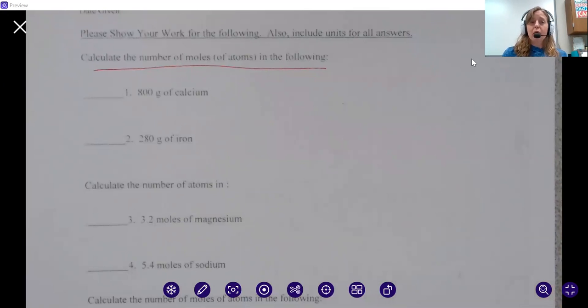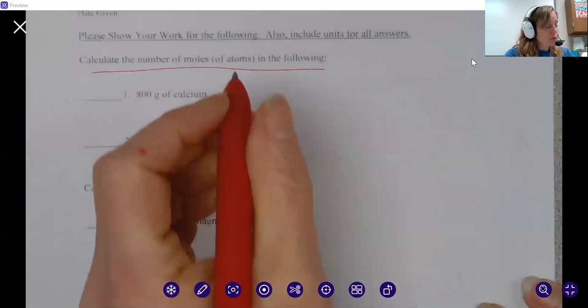When you're setting these problems up, remember it depends on what they give you in the problem. In this first one, we're calculating the number of moles of atoms in the following. We're looking for moles, so if you're looking at your roadmap, we're going from the left side, mass to moles.